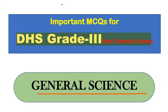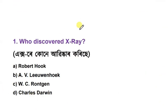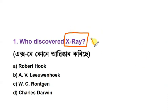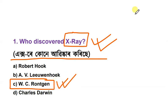I will show you the video, and the first question is: who discovered X-ray? The options are Robert Hooke, Leeuwenhoek, W.C. Röntgen and Charles Darwin. The answer is W.C. Röntgen — W.C. Röntgen discovered the X-ray.